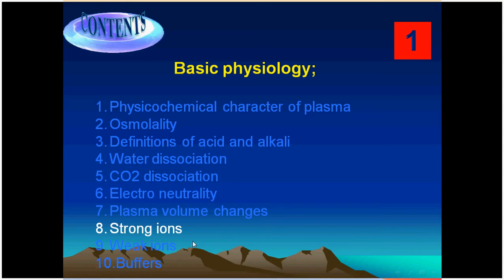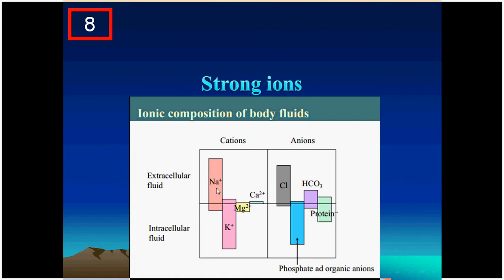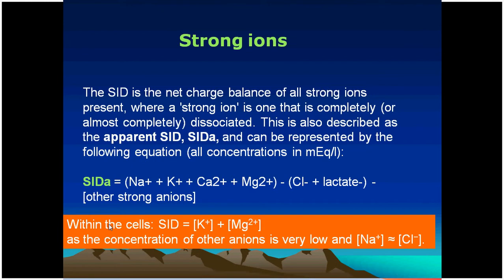Bismillah ar-Rahman ar-Rahim. This lecture is about strong ions and we are going to discuss strong ion differences. We normally have distributions of extracellular and intracellular fluids with cations and anions in different concentrations. When we look at these cations and anions, we arrive at what we call strong ions — strong cations and strong anions. Some anions and cations, when present in solutions in water, dissociate completely. For example, sodium chloride dissolves in water to give sodium and chloride — you will never find an intact sodium chloride molecule. Therefore, sodium is a strong cation and chloride is a strong anion.